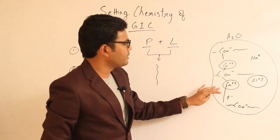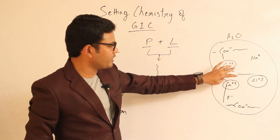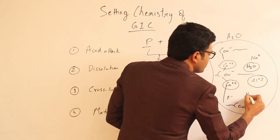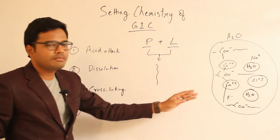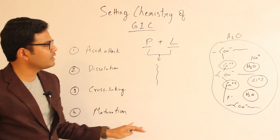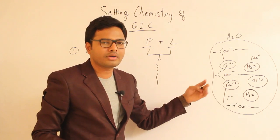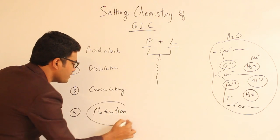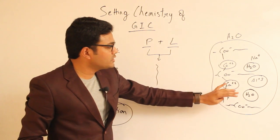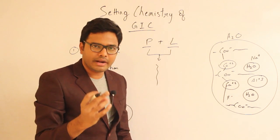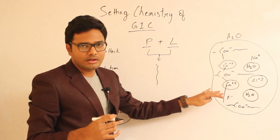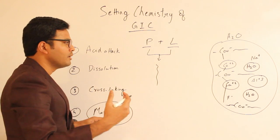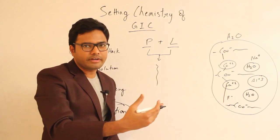And then we have something called maturation. Once this cross-linking happens, the entire matrix is hydrated over time with water. This hydration of the entire set matrix with water over time is called maturation. This phase is really very important as maturation imparts structural stability and strength to the gel structure, helping the set cement overcome any insensitivity caused by moisture.